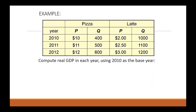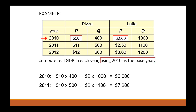Now, if we want to calculate real GDP in each year, we first need to define a base year. I'm going to define the base year as 2010. That means we're going to use the price of a pizza in 2010 and the price of a latte in 2010, and evaluate output in 2010, 2011, and 2012 using those base year prices. Notice that in each year the prices do not change — we're using the base year prices, but we allow the quantity to change, reflecting total production in the economy.